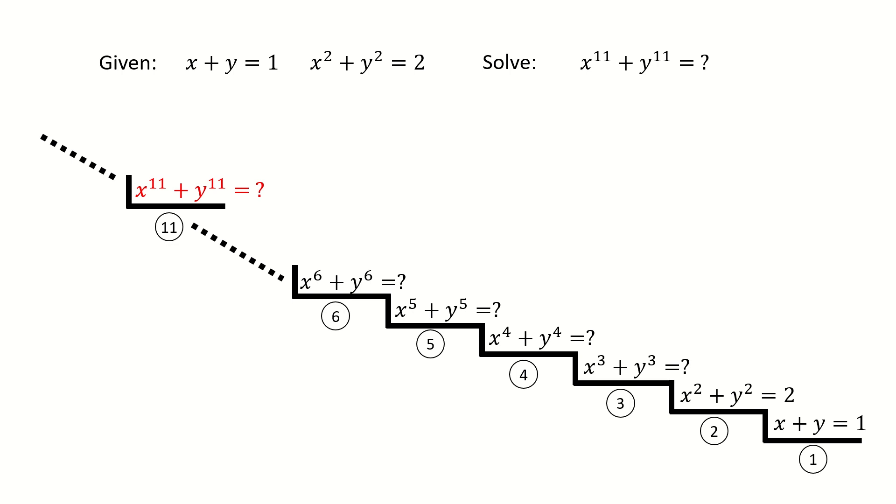Before we proceed, I want to mention the notation here. The oval mark stands for two things. For example, oval 1 stands for stair 1 and also stands for x + y. Oval 2 stands for stair 2 and also stands for x² + y². I need to emphasize this oval notation because later it helps us see the pattern.